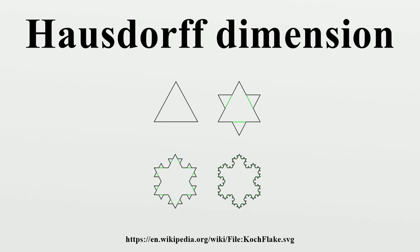Examples: Countable sets have Hausdorff dimension 0, the Euclidean space R^n has Hausdorff dimension n, and the circle S^1 has Hausdorff dimension 1. Fractals often are spaces whose Hausdorff dimension strictly exceeds the topological dimension.